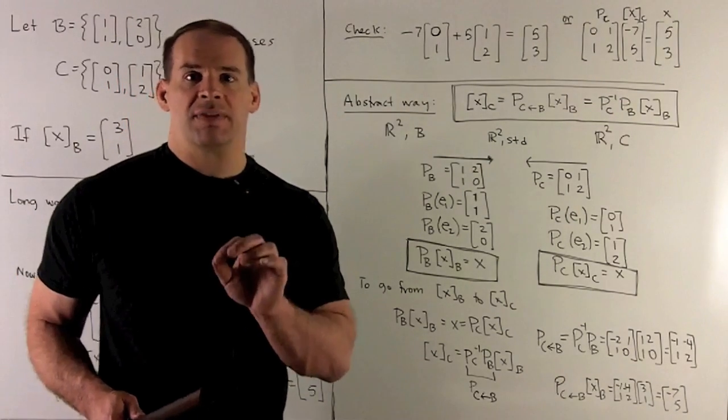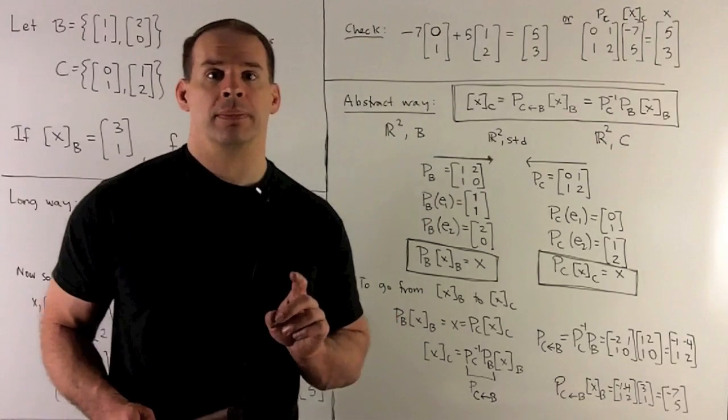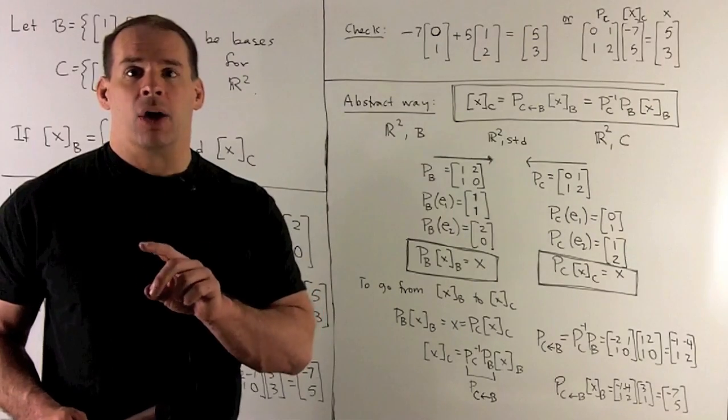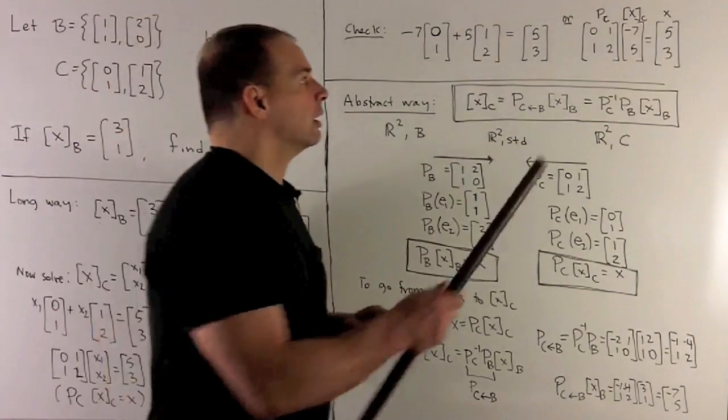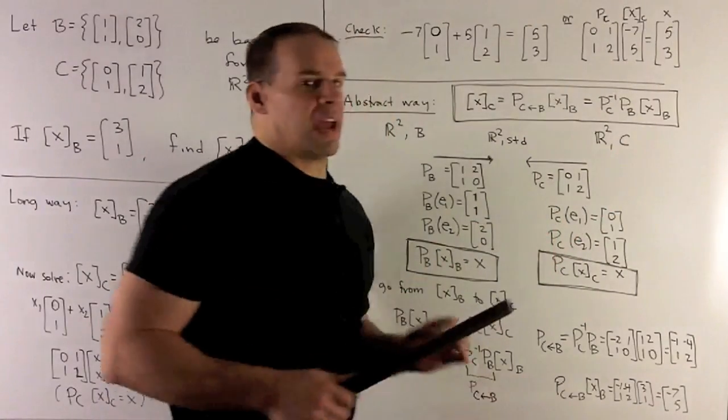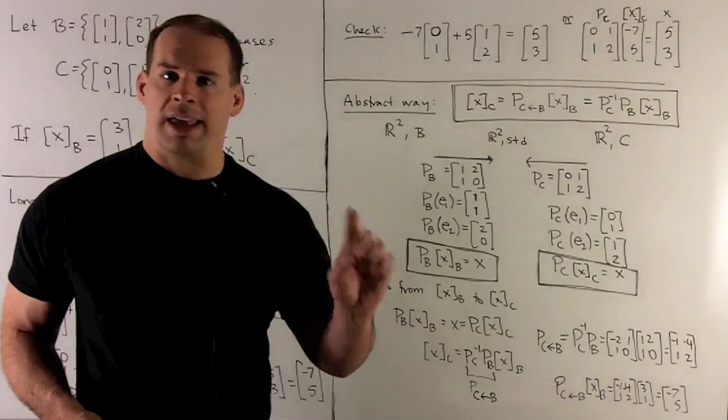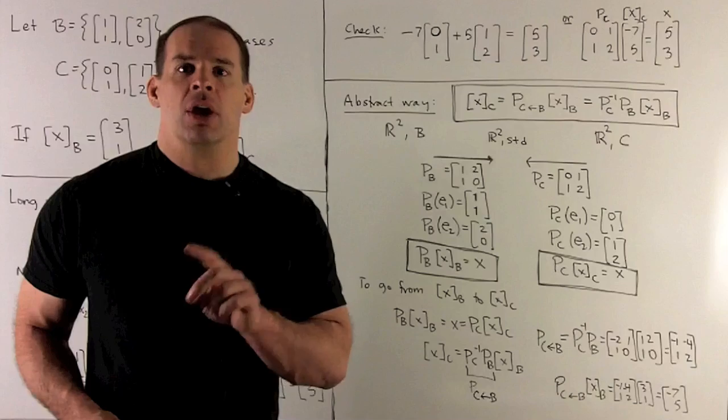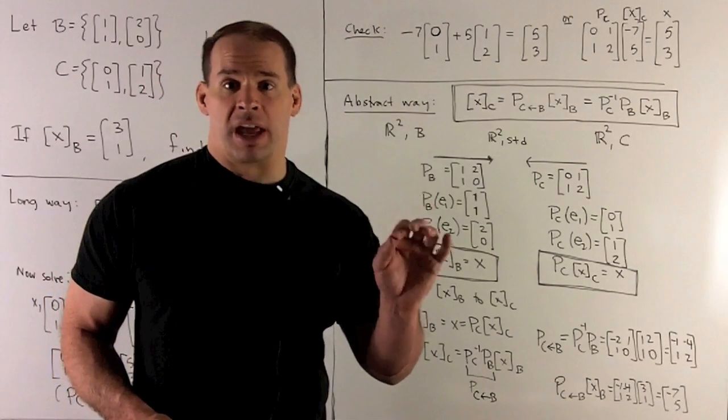That's going to be the vector where we take the basis vectors, load them in as the columns, and in order. Then, if I take P_C, multiply by our coordinate vector for X with respect to C, out comes X. Okay, that looks like a fancy equation. All that's saying is, take the linear combination of these basis vectors, I get X. So, it's going to be a relation between basis matrix, coordinate vector, and then X, the vector in standard basis.